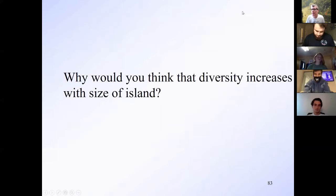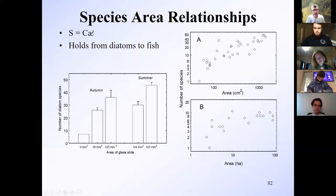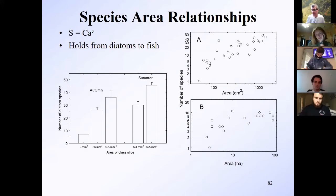What does S = CAZ mean? S is the number of species. C and Z are constants relating them — it's a logarithmic relationship. A is the area of the island or habitat you're talking about, so it could be the size of a pond or a lake. That's a common one for fresh waters to think about.